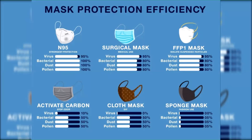Masks made of simple cloth are not as good at protection against micro-organisms; however, they will protect you against dust and pollen particles. Surgical masks offer very good protection against micro-organisms, dust, and other macro-particles such as pollens. Cloth masks don't offer any protection against micro-organisms; however, they offer about 50% protection against dust particles and other particles such as pollen. N95 masks offer the best protection against bacteria, 95% protection against viruses, and 100% protection against dust particles and other macro-particles such as pollens.